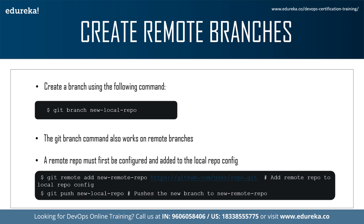You can create a branch using the command: git branch new-local-repo, where new-local-repo is the name of the branch. The repository history remains unchanged — all you get is a new pointer to the current commit. This only creates the new branch; to start adding commits to it, you need to select it with git checkout, then use the standard git add and git commit commands.